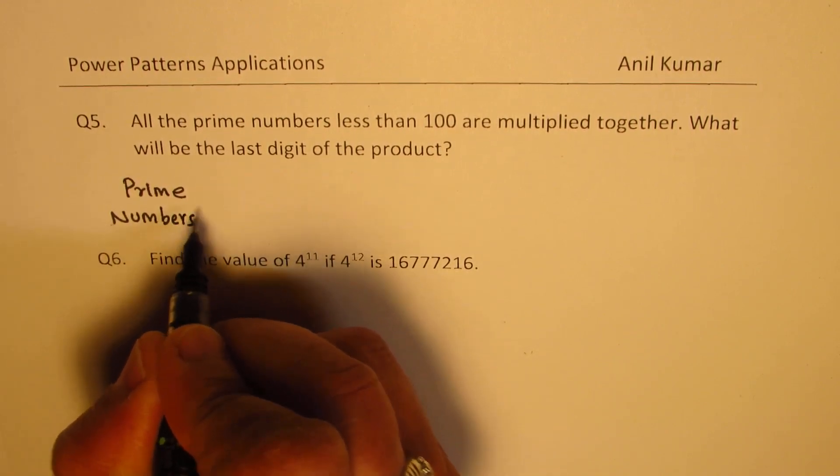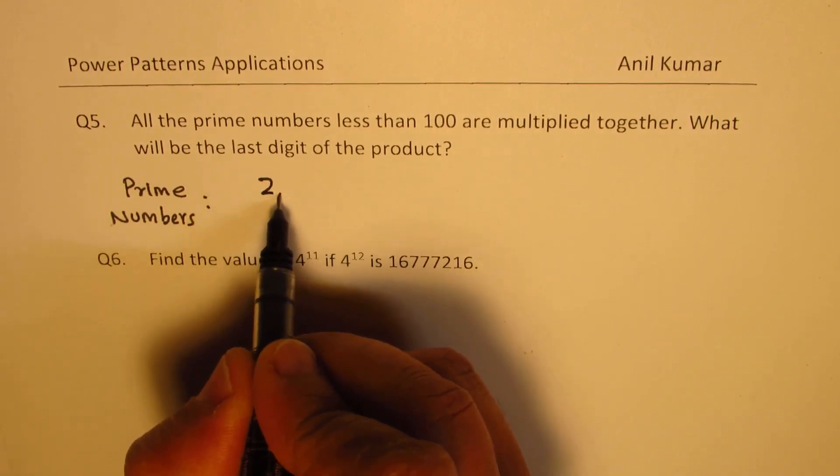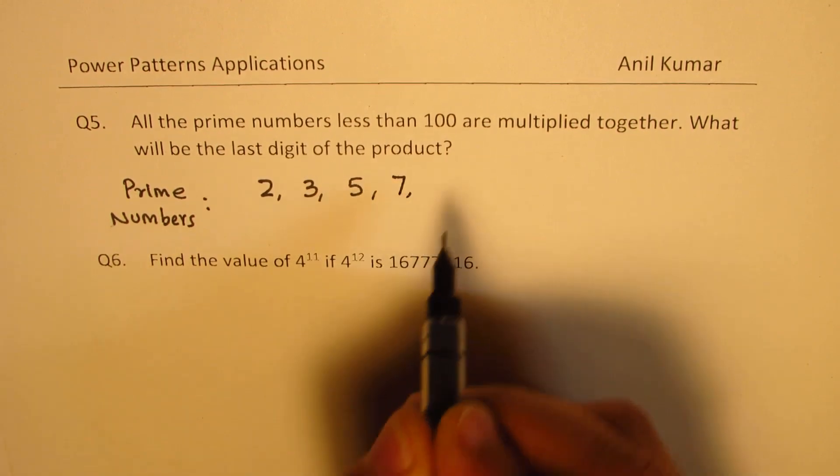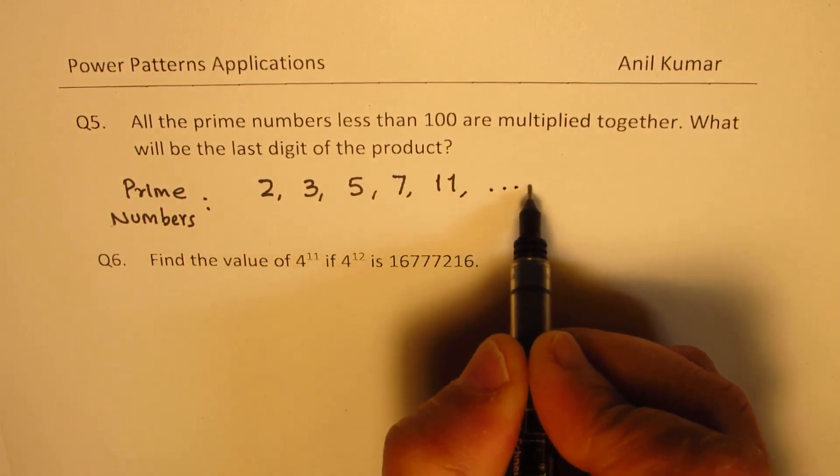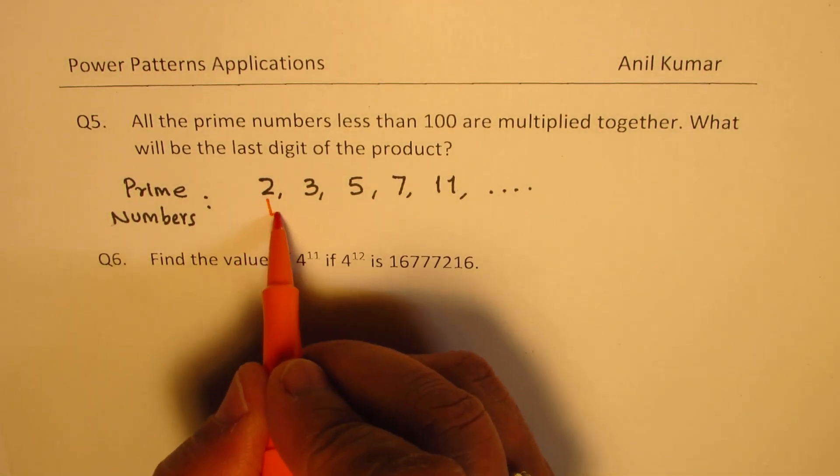You don't really have to multiply the prime numbers. So the prime numbers are 2, 3, 5, 7, 11, and so on. Do you notice something? I'm going to multiply all these. So if I multiply, I will get what? 2 times 5 will give me 10.